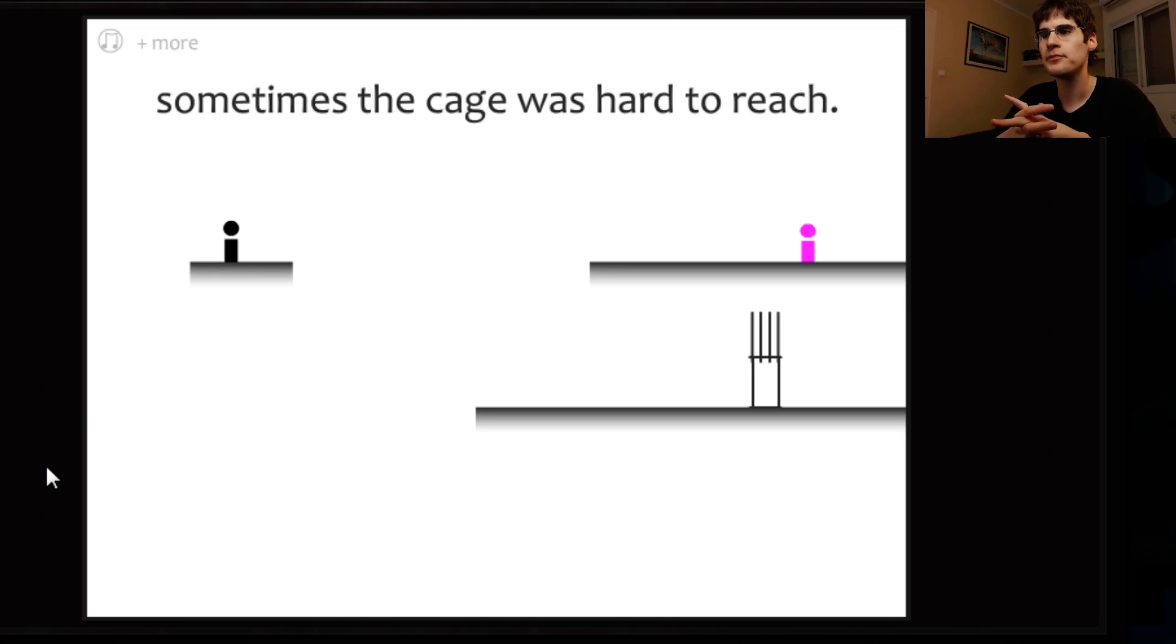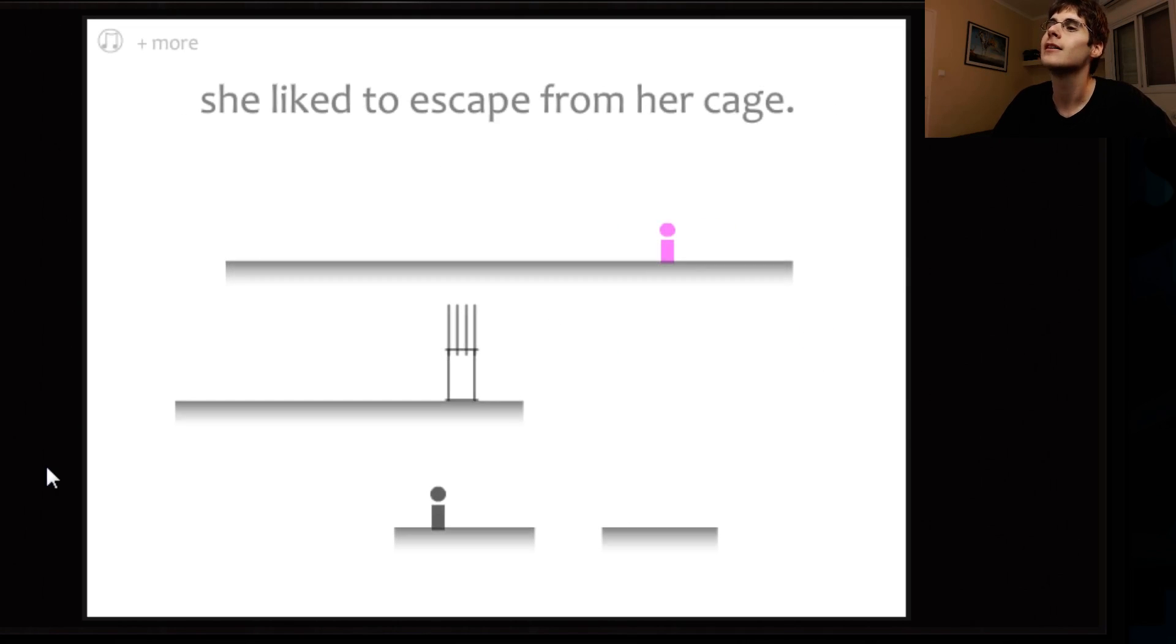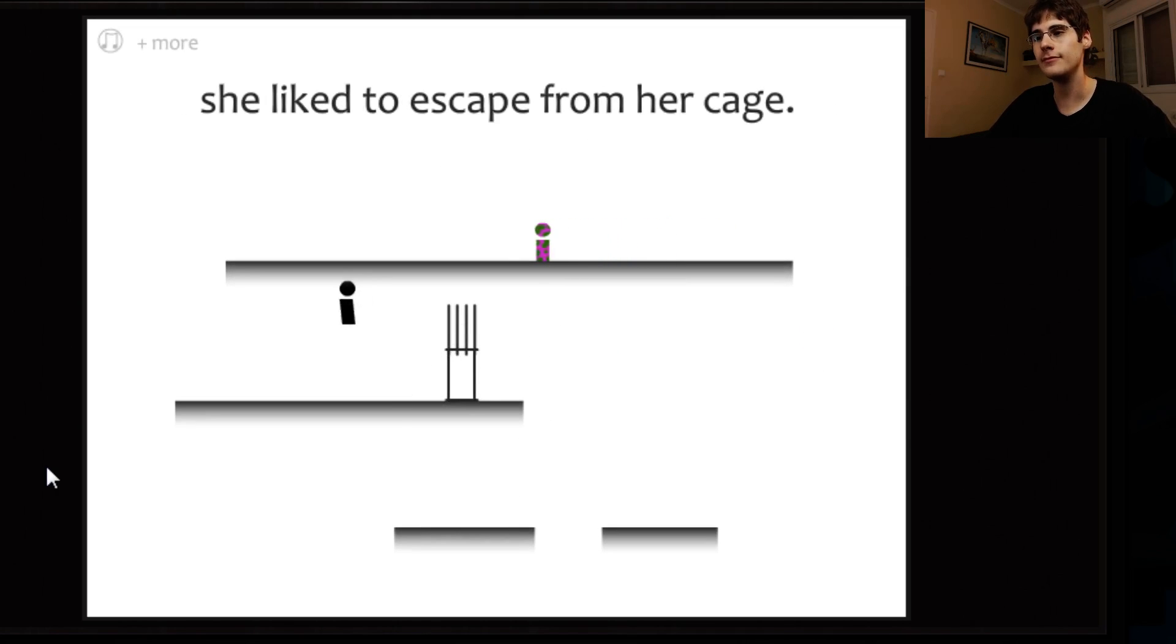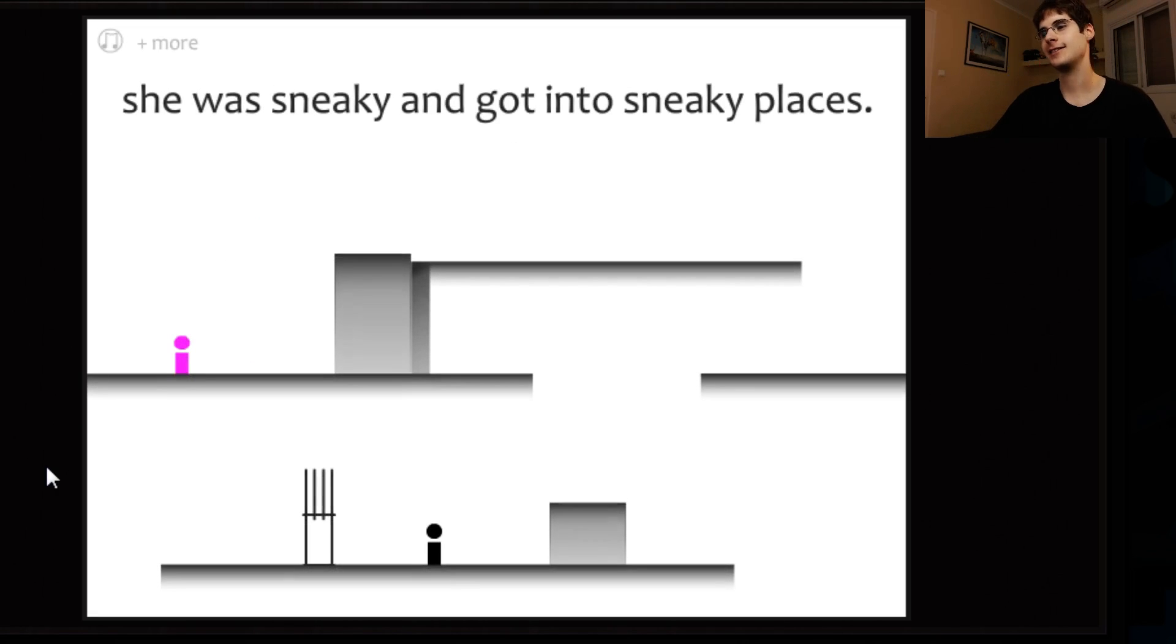I will talk about that in a second. The progression is kind of slow in different new things that are happening. But it works because you get that reward at the start of every level and at the end of every level. You get the little reward because a little bit of story. Sometimes the cage was hard to reach. I'm glad she loves to follow me. She liked to escape from her cage. But I'd always put her back. It's really adorable.